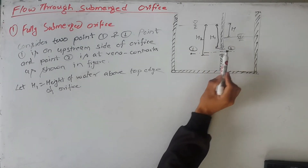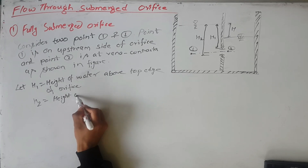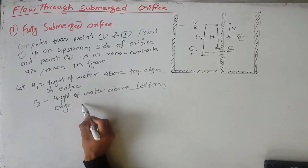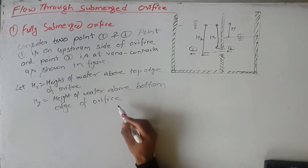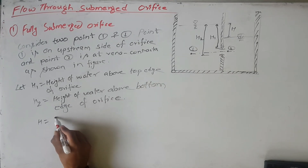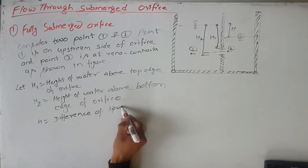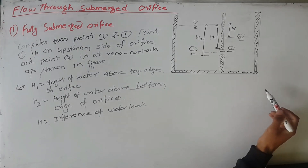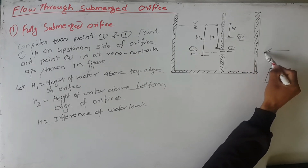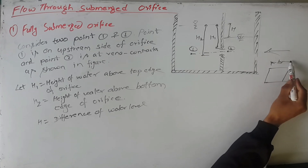Height of the liquid above the top edge of the orifice is h1, and h2 is the height of the water above the bottom edge of the orifice. Let h be the difference of the water level. We let the width of the orifice be B. This is the side view; when looking in this direction, the orifice appears as a rectangle with width B.